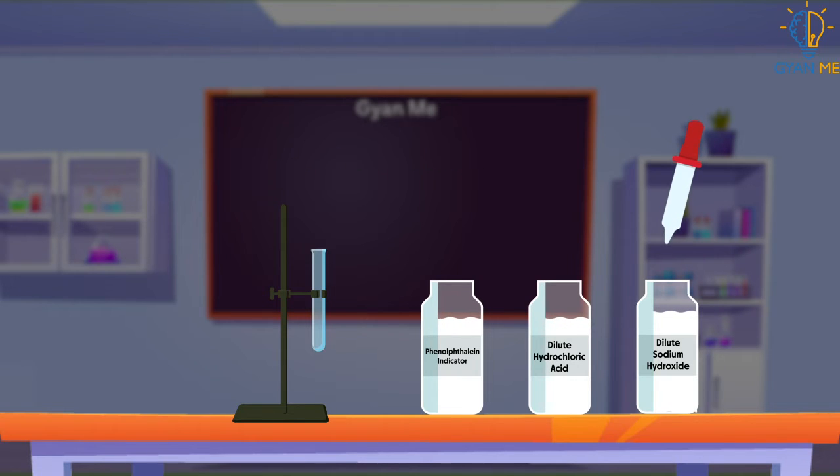Now we take about 2 ml of dilute sodium hydroxide solution in a test tube and add 2 drops of phenophthalein indicator and observe the solution. What do we observe? Yes, you are right, we observe that the solution turns pink in color.